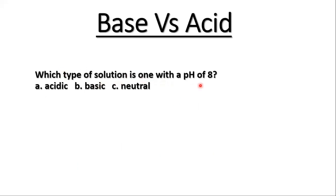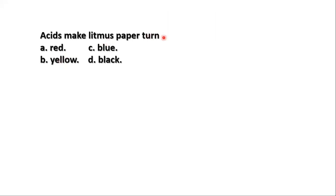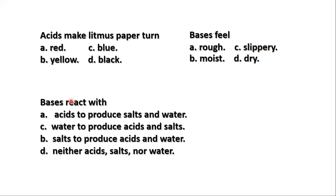Which type of solution is one with a pH of 8? A pH of 8 is a base, since bases have a pH above 7. Acids taste sour and turn blue litmus paper red. Bases are slippery to touch and turn red litmus paper to blue. Bases react with acids to produce salt and water.